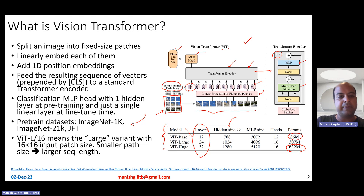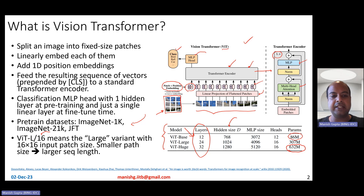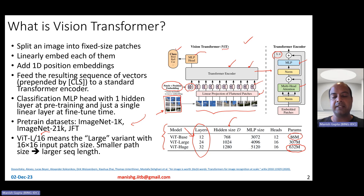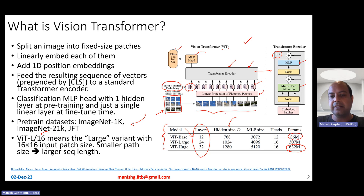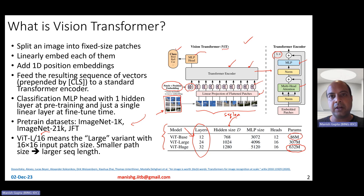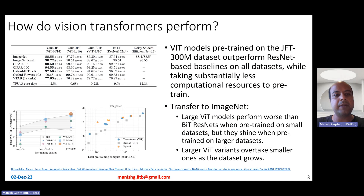VIT models typically use a notation like VIT-L/16, which means it's a large model — L stands for large — and 16 stands for the 16×16 input patch size. Smaller patch size means you will have a larger number of tokens and patches overall, which means the Transformer's sequence length could be larger. The sequence length also depends on the height and width of your overall image.